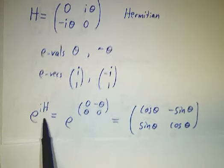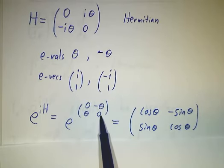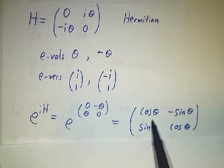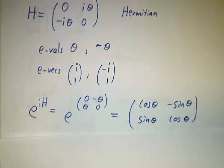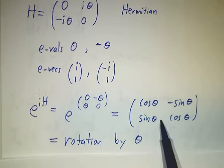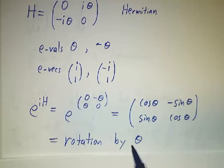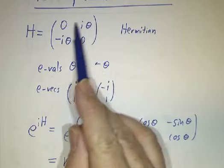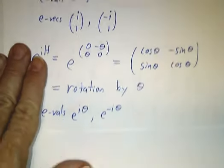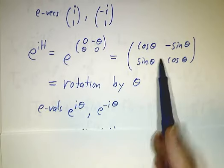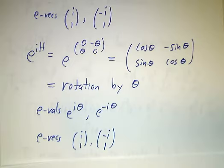And if you exponentiate it, you take e to the iH. Well, iH is 0θ minus θ0, and this is a matrix we've seen before. When you exponentiate this matrix, you get cosθ, sinθ, minus sin cos, which is unitary. It's actually real, so it's a real orthogonal matrix. It just gives you a rotation by θ. So you get rotation by θ by exponentiating this Hermitian matrix, or i times that Hermitian matrix. The eigenvalues of this matrix are e to the iθ and e to the minus iθ, and the eigenvectors are the same as before.